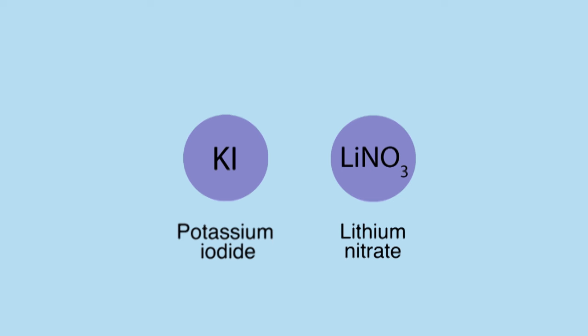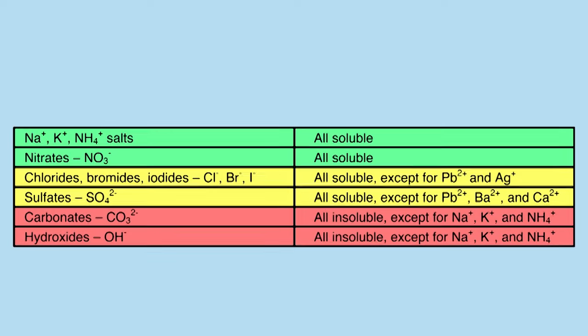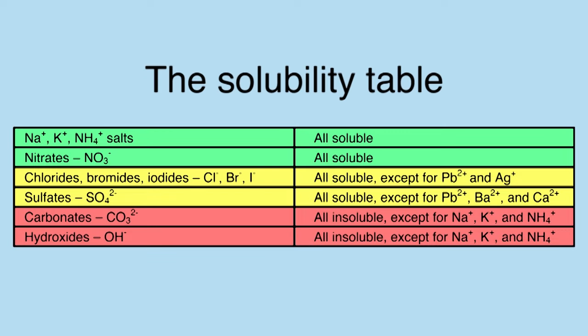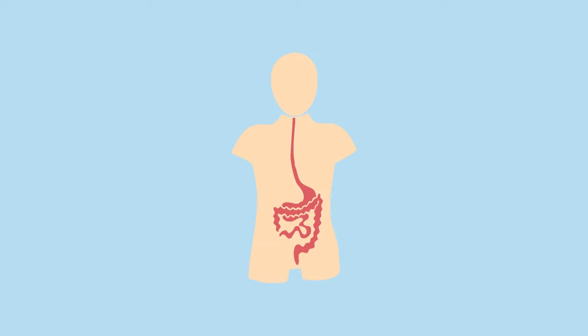Although it is recommended that you learn these solubility rules, chemists have combined this data into a table called the solubility table. Why is this important, you might ask? Imagine you had to x-ray your gastrointestinal tract and were given a solution of barium chloride instead of a suspension of barium sulfate. Barium ions are inherently toxic, and this could lead to many complications and even death.